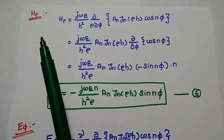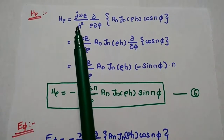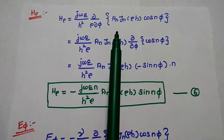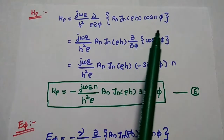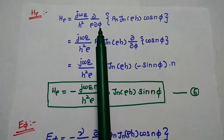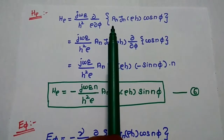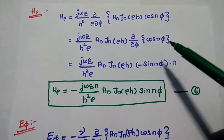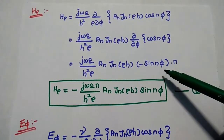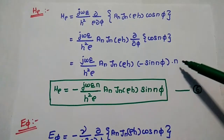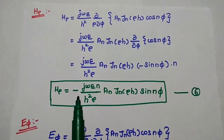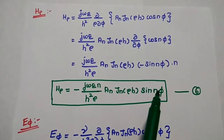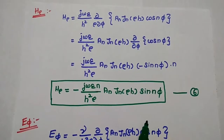Next we are going to find the value of H rho. H rho is equal to J omega epsilon by H square, dou by rho dou phi of EZ value AN JN of rho H cos N phi. Here we differentiate with respect to phase angle phi. We take AN and JN of rho H outside, and differentiate cos N phi to get minus sin N phi into N. This gives minus J omega epsilon N by H square rho, AN JN of rho H sin N phi. Consider this as the sixth equation.